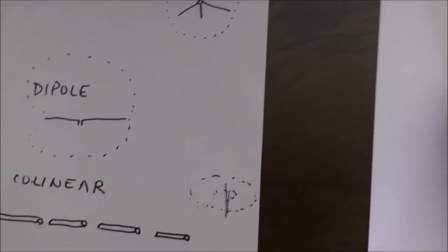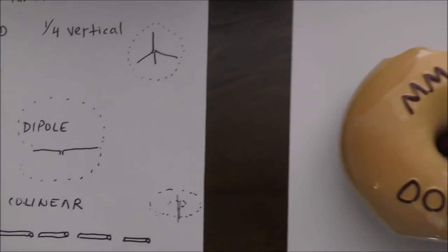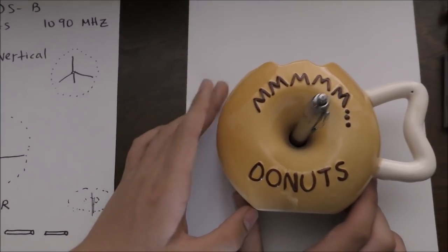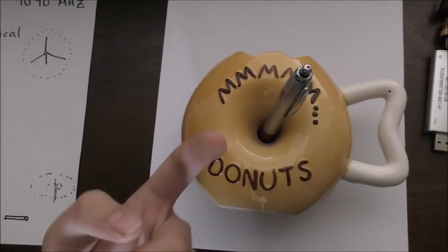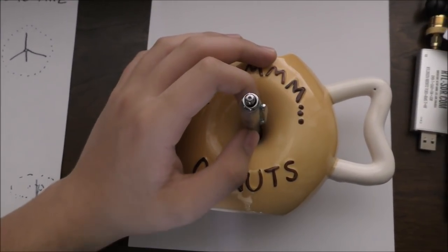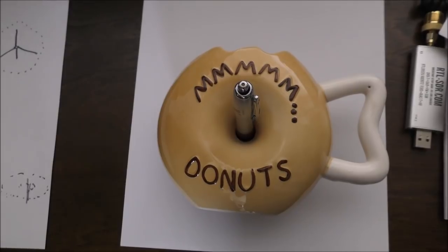And then a collinear antenna shapes its sensitivity like a donut, almost like this. Around the top, you're going to get a lot less sensitivity than around here, and it bends towards the middle.